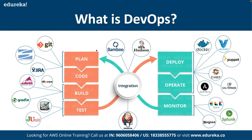Next we define the testing tools — Selenium, Appium, JUnit — to make sure we have complete clarity and can test the applications, creating test scripts and applying them to the successfully built application code. Then we move to the deployment platforms, like Docker, where we define how containers are going to be created for container-based deployment.